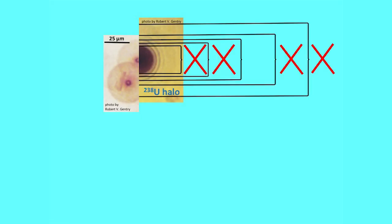Either radon-222 or polonium-218 would produce the three rings we have and not the five. For the single-ring halos, they correspond to only the middle one of the five uranium rings. So it can't be whatever makes the innermost or outermost rings — it must be either radon or polonium producing that single-ring halo.